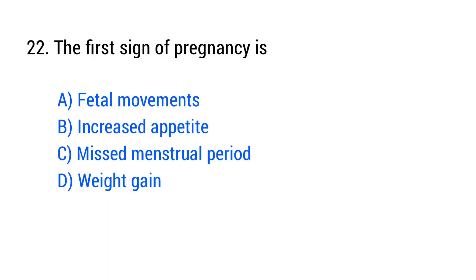Question No. 22. The first sign of pregnancy is? The right answer is Option C: Missed menstrual period.